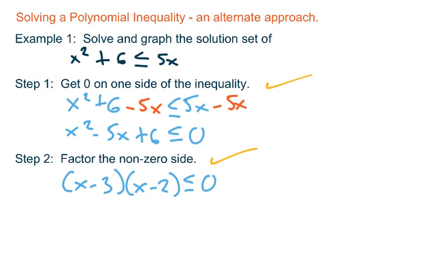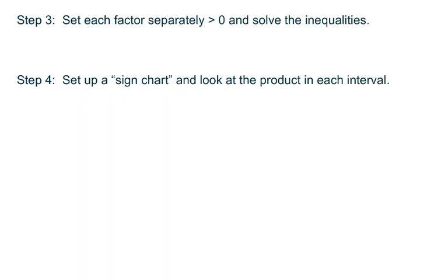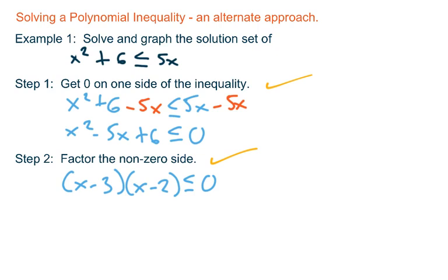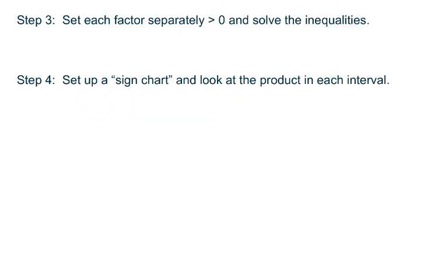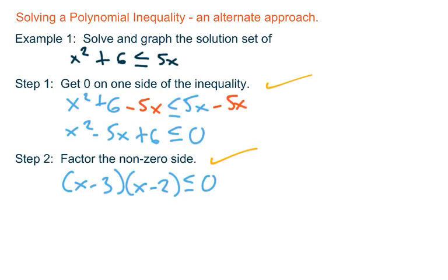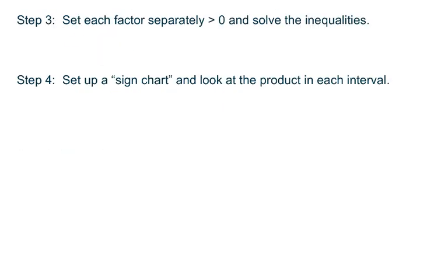Step three is going to seem very peculiar. What it says is: look at each factor separately and set it greater than zero and solve the inequalities. Now you might immediately say, this inequality involves something less than or equal to zero, but you're saying to set each factor greater than zero. I'll ask you to trust me on this, and you'll see as time goes on why that's useful. The two factors are x minus 3 and x minus 2. Take x minus 3 greater than zero, and x minus 2 greater than zero, and solve. The first one: add 3 to both sides, and you get x greater than 3.